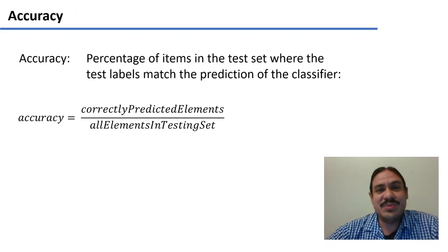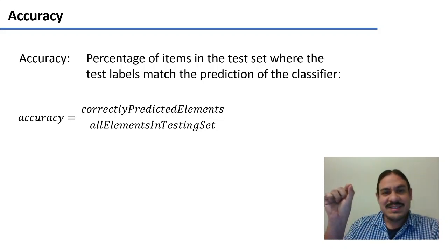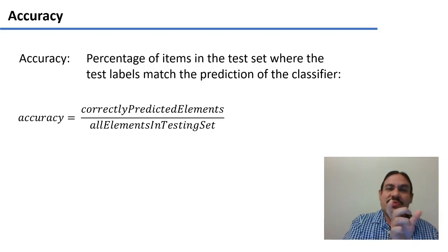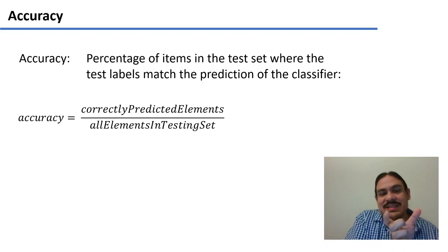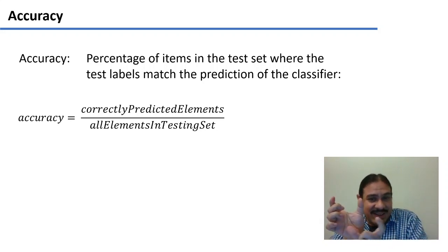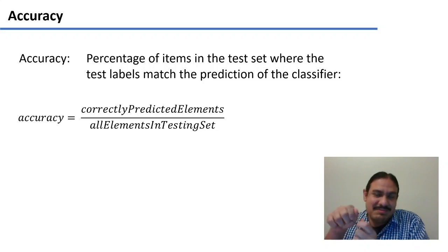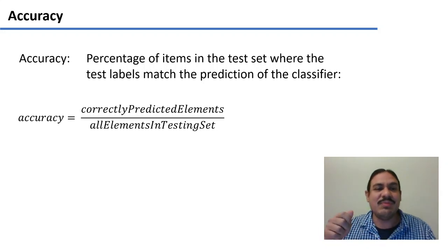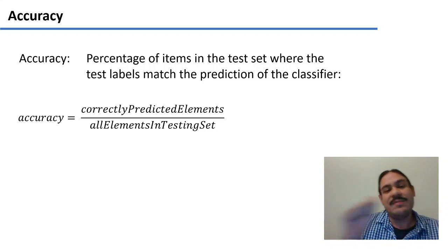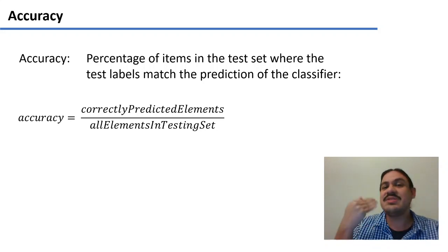The first measurement is very simple — it's just accuracy. It's the percentage of items where the label in the testing set matches the prediction from the classifier. So if you take a vector in the testing set and it's for a positive movie review, and then you run that through the classifier and it says the review is positive, these two match. The prediction matches the label, and we know the model performed correctly. So we have the count of all the elements predicted correctly divided by all of the elements in the testing set — this is the percentage of accuracy from 0% to 100%.